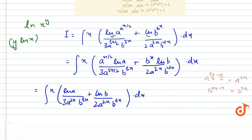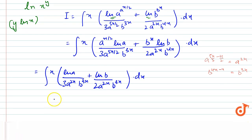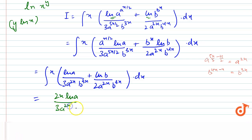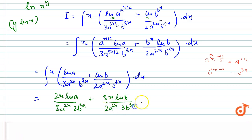Now we can take a^(3x) and separate it. This gives us a^(3x+3x) times log(b)/2 times a^(2x) times 3 times b^(3x), dx.